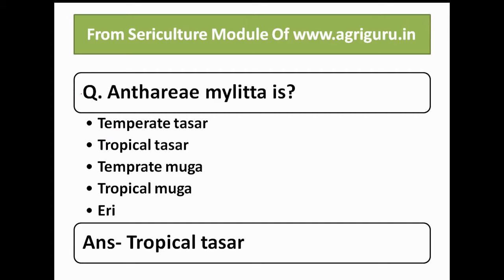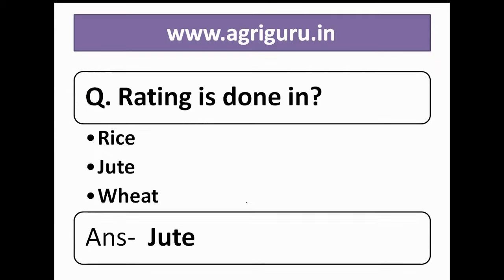From the sericulture module of agriguru.in, the question is: N3 melita is what? The answer is tropical tracer. Question number 20: retting is done in which crop? The correct answer is jute. The options are rice, jute, and wheat.